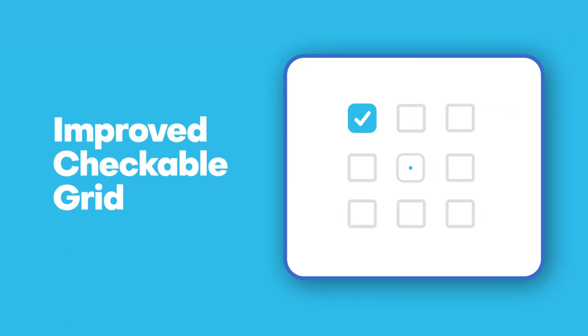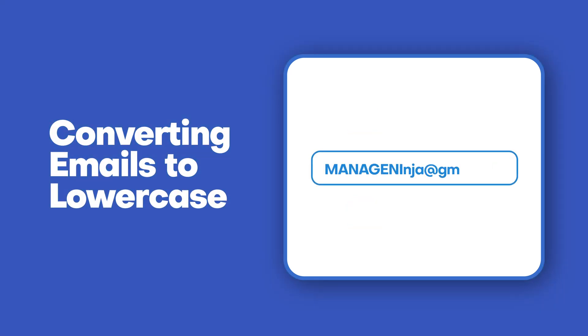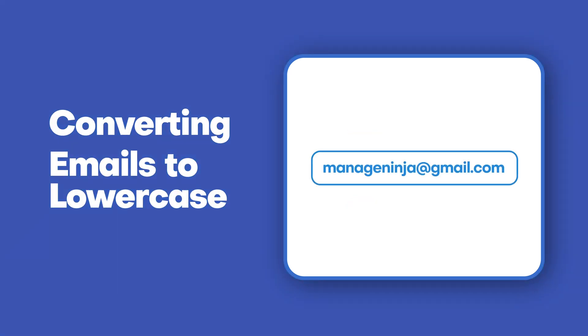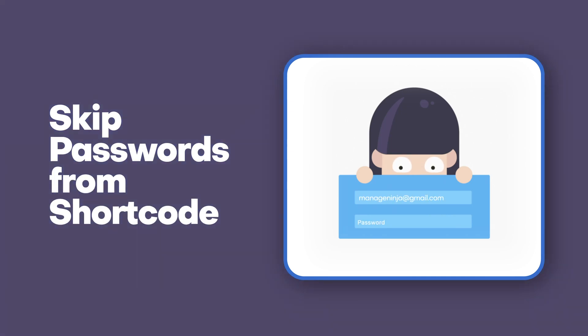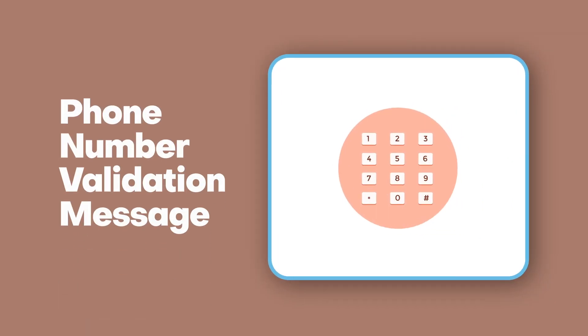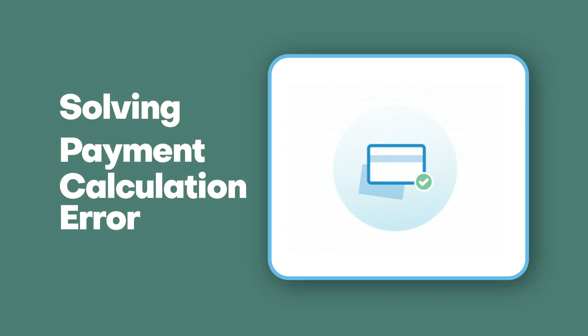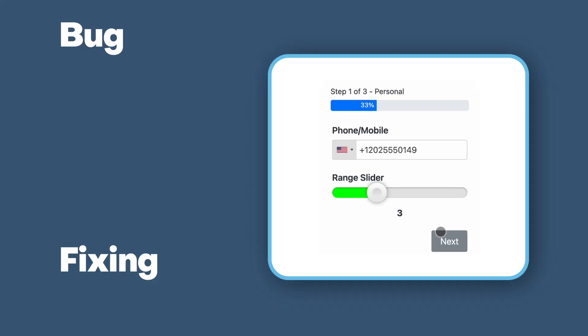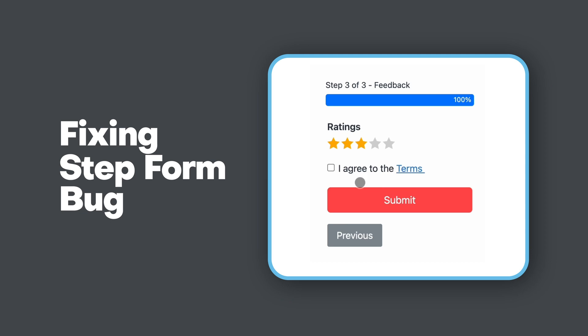Along with these new features and integrations, we have implemented a handful of improvements and upgrades in this update, such as an upgraded checkable grid report, automatically converting emails to lowercase after submission, skipping the password field from the shortcut, and support for other fields in the map field. We have also resolved a couple of bugs, including phone number input validation message, payment calculation error, date field bug, step form bug issue, and more.